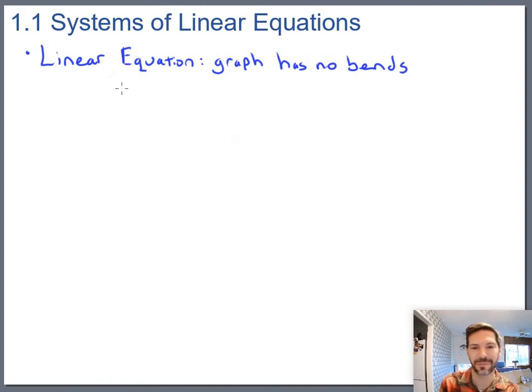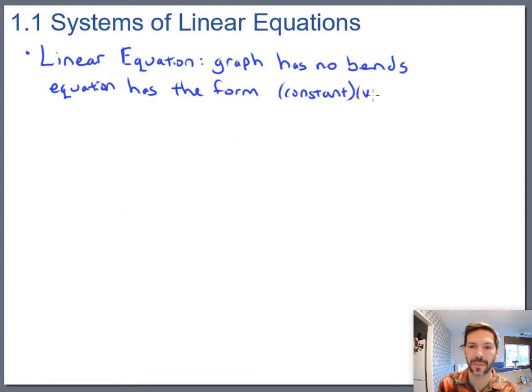So linear equation is a graph with no bends - we know what that means visually now, but what does it mean algebraically? As far as algebra goes, we'll say the equation has the form of a constant times a variable to the first power plus another constant times another variable and so on.